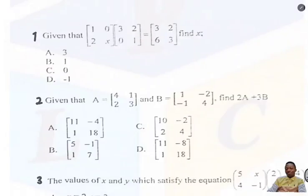Given that A is equal to [4, 1, 2, 3] and B is equal to [1, -2, -1, 4], find 2A plus 3B. So this is a scalar multiplication of a matrix. You have 2A plus